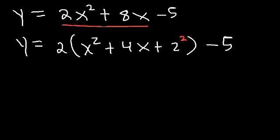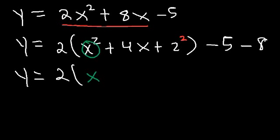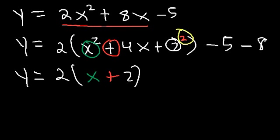To maintain the same value on the right side, since we added 8, we need to subtract 8 as well. Now let's factor. The quick and simple way is: x plus 2, squared. You can literally see everything you need in that expression. And negative 5 minus 8 is negative 13. So this is the answer in vertex form.